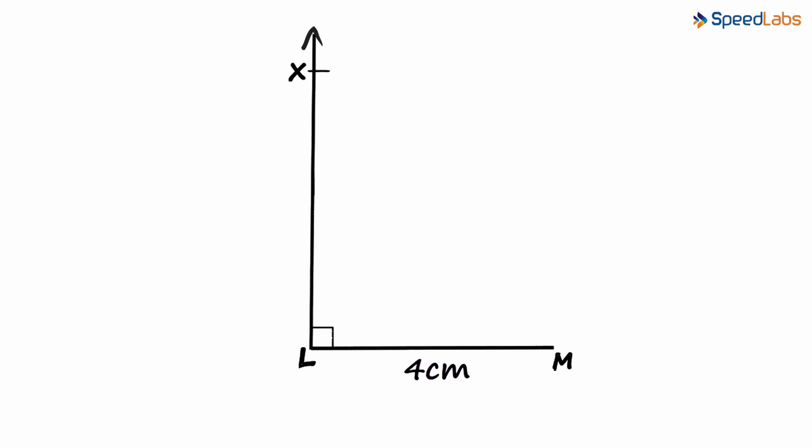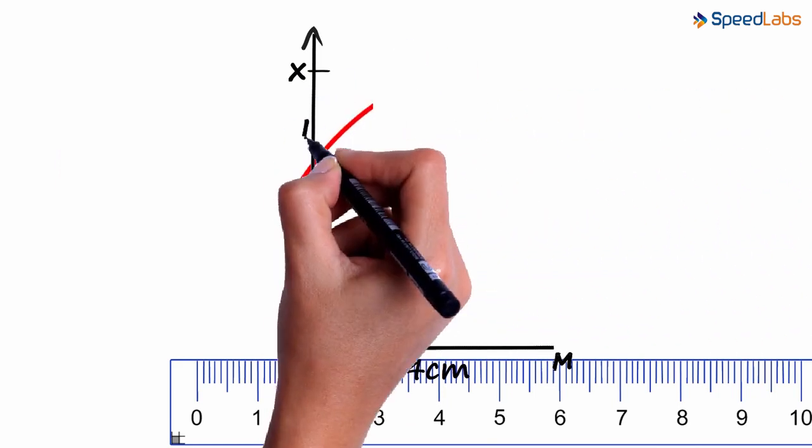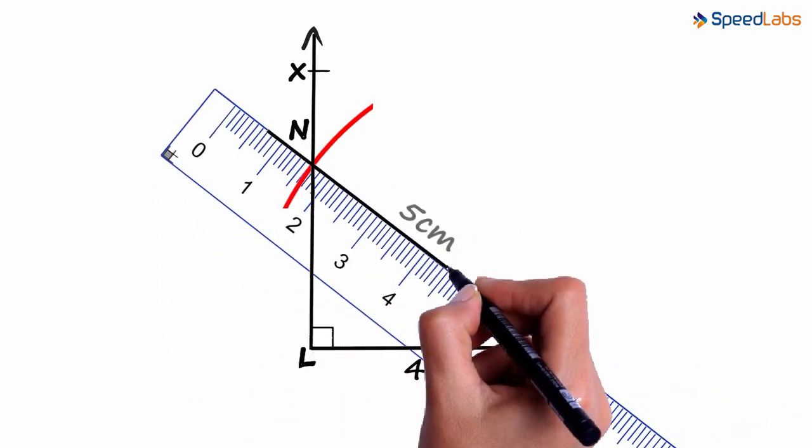The only other data we have is that of segment MN which measures 5 centimetres. We set the compass width to 5 centimetres and keep it at point M. And we cut an arc across ray LX. We join MN to get triangle NLM.